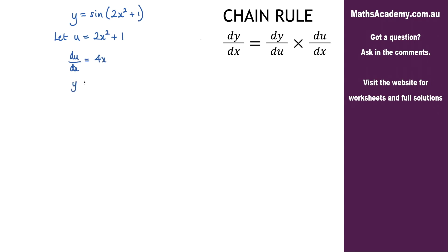So what I've got so far is that y is equal to sine, and instead of 2x squared plus one, I've made this substitution and I'm using u. So y equals sine u.